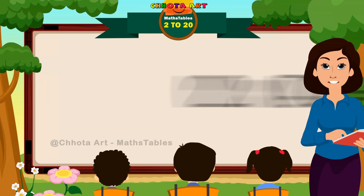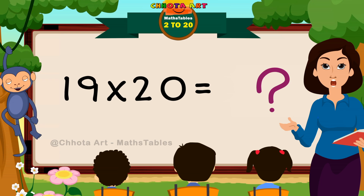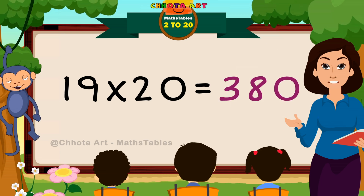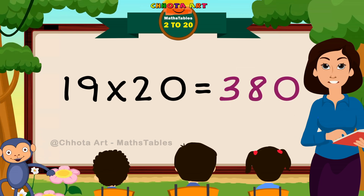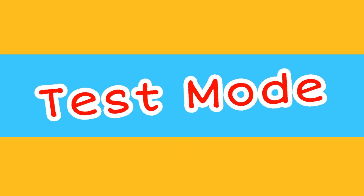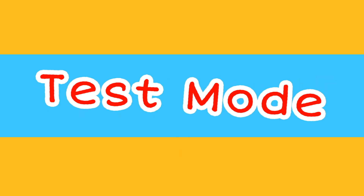19 times 20 is 380. Get ready for the test mode.